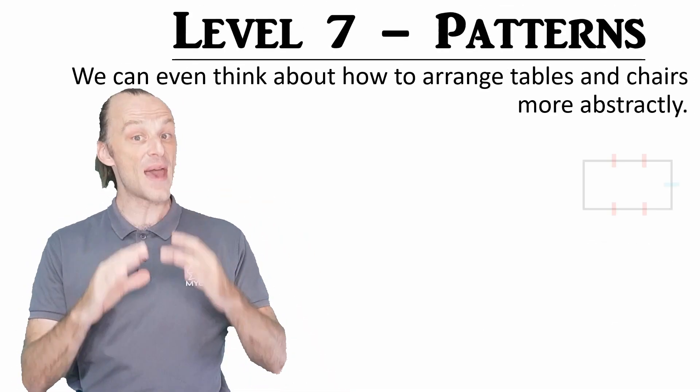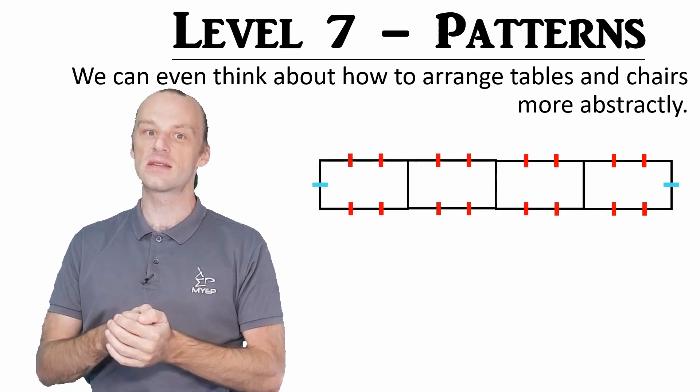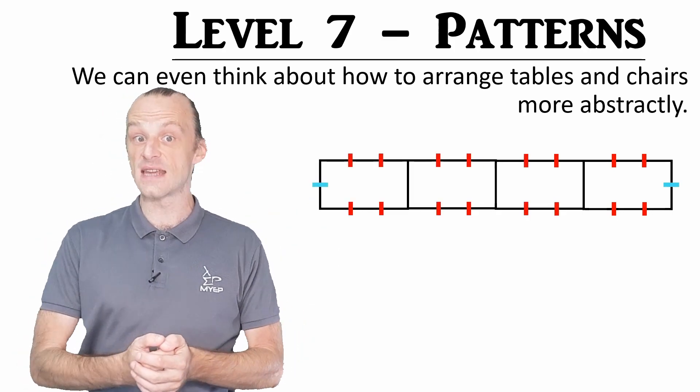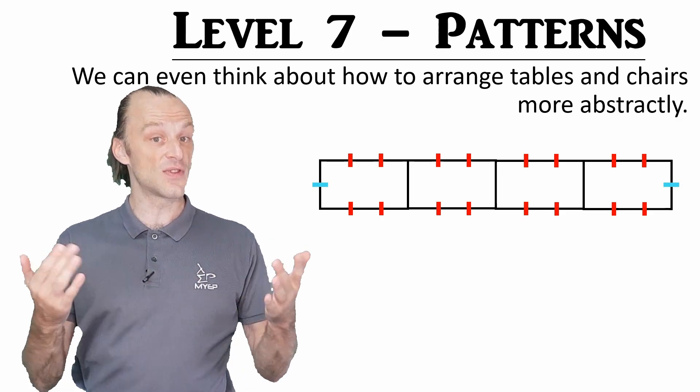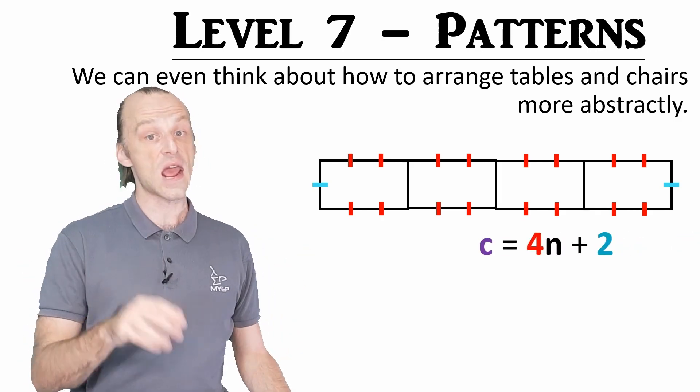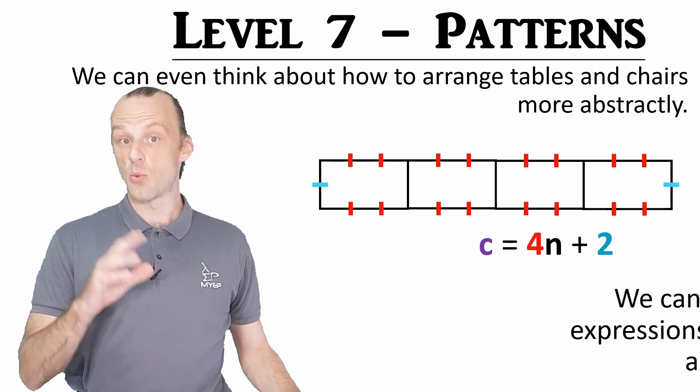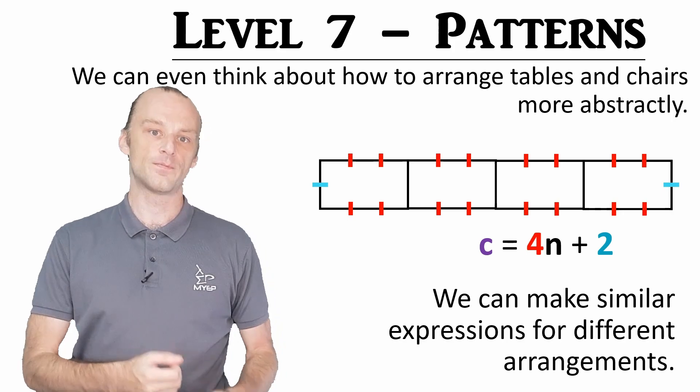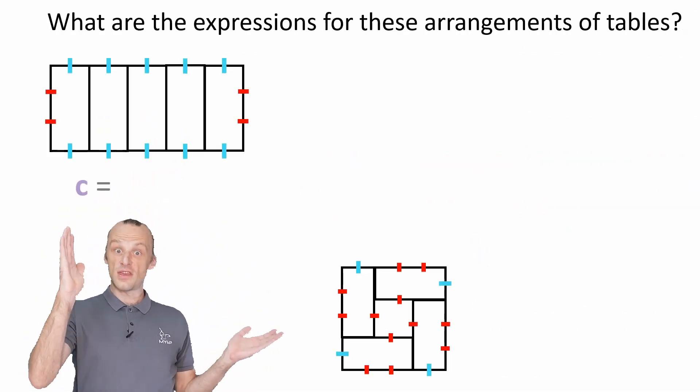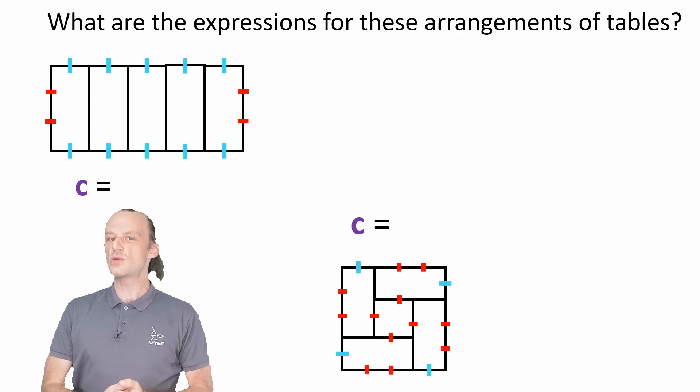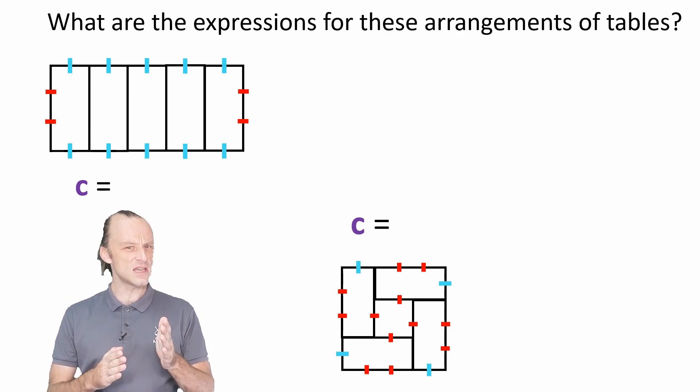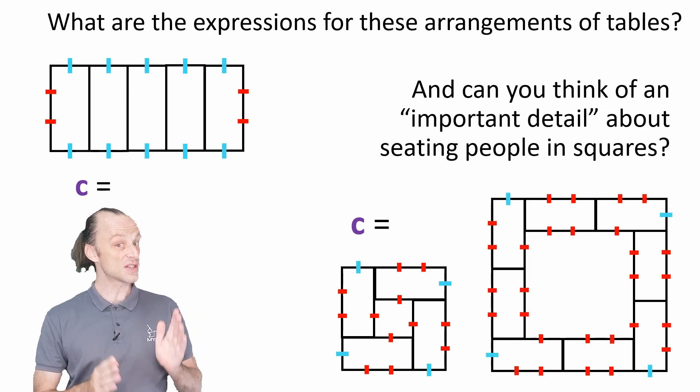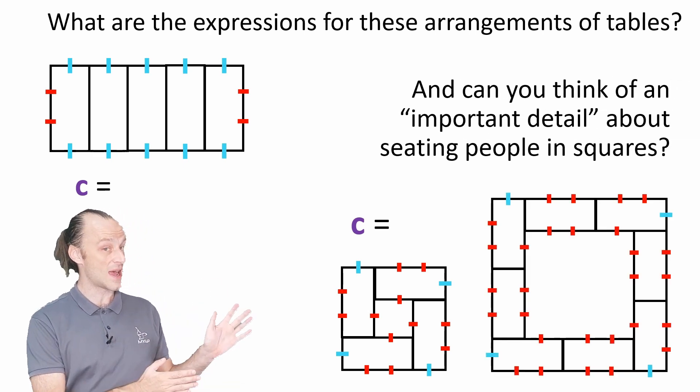If we take our abstraction one step further, we get to the patterns behind the maths. We know that if we set our tables end to end, we can make an expression for the number of chairs. Now that we understand how that expression works with one arrangement of tables, we can do it with other arrangements of tables. Take a look at these arrangements of tables. What expression would we use for the number of chairs C? And can you see an important detail we might have missed if we are seating dinner guests in squares like this?